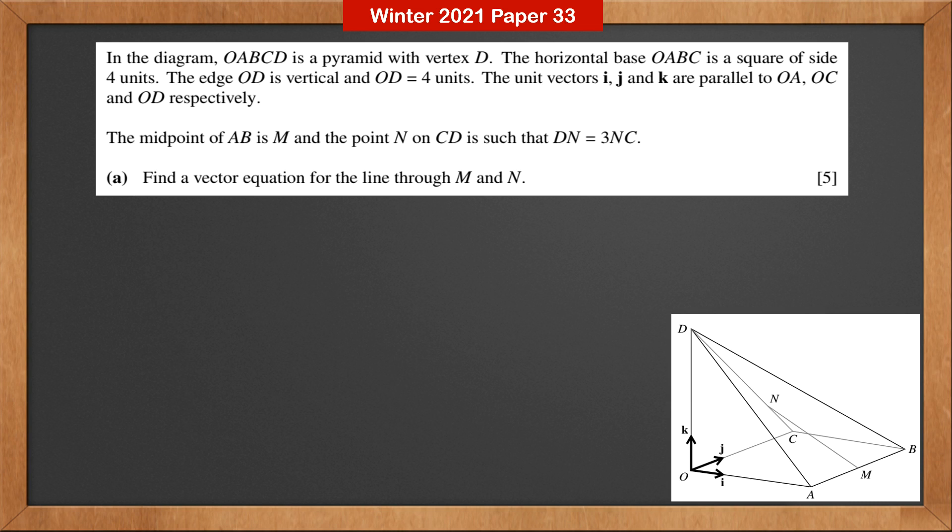and the point N on CD is such that DN is 3 times NC. Part A, find a vector equation for the line through M and N.